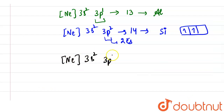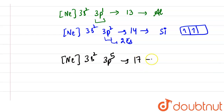Let us see option three: [Ne] 3s2 3p5. This is the electronic configuration of element 17, which is chlorine.